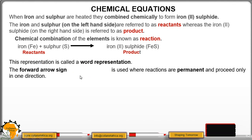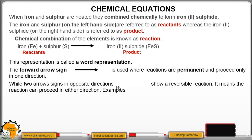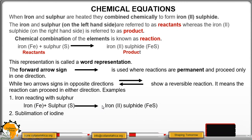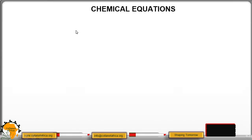So the forward arrow sign is used where reactions are permanent and proceed only in one direction. While two arrow signs in opposite direction show a reversible reaction that we see in temporary changes. It means the reaction can proceed in either direction of the two. So we have this arrow moving in this direction, and the other one in the opposite direction. So the reaction is reversible, like what we did in sublimation. Example, iron reacting with sulfur. So when they react, you form iron sulfide.